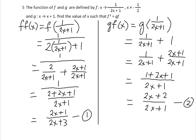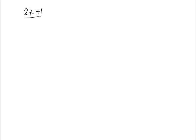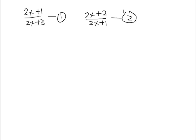Since f squared equals gf, we set the two expressions equal. Expression 1 is (2x+1)/(2x+3) and expression 2 is (2x+2)/(2x+1). Therefore expression 1 equals expression 2.